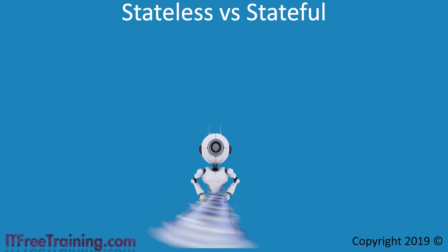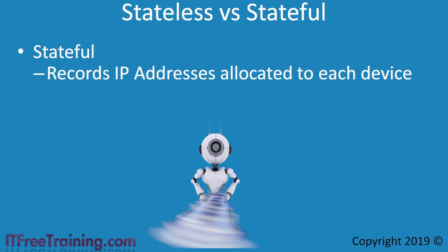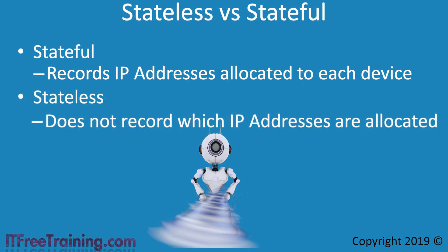I will first look at stateless and stateful. IPv6 supports network configuration using these two different methods. Stateful is when IP addresses are allocated to devices and a record is kept of which IP addresses are allocated to which devices, allowing an administrator to see which devices are on the network at any time. In contrast, stateless does not record which IP addresses are allocated to which devices, requiring no storage and being easier to implement — generally making it a good choice for routers. IPv6 supports both stateless and stateful, while IPv4 supports stateful only.